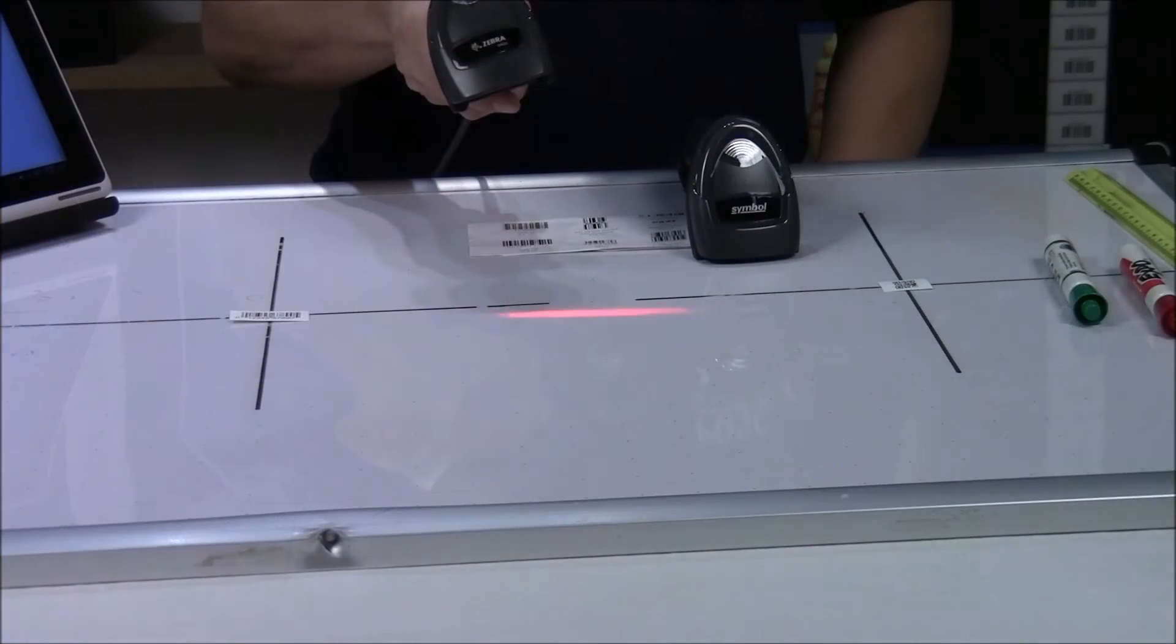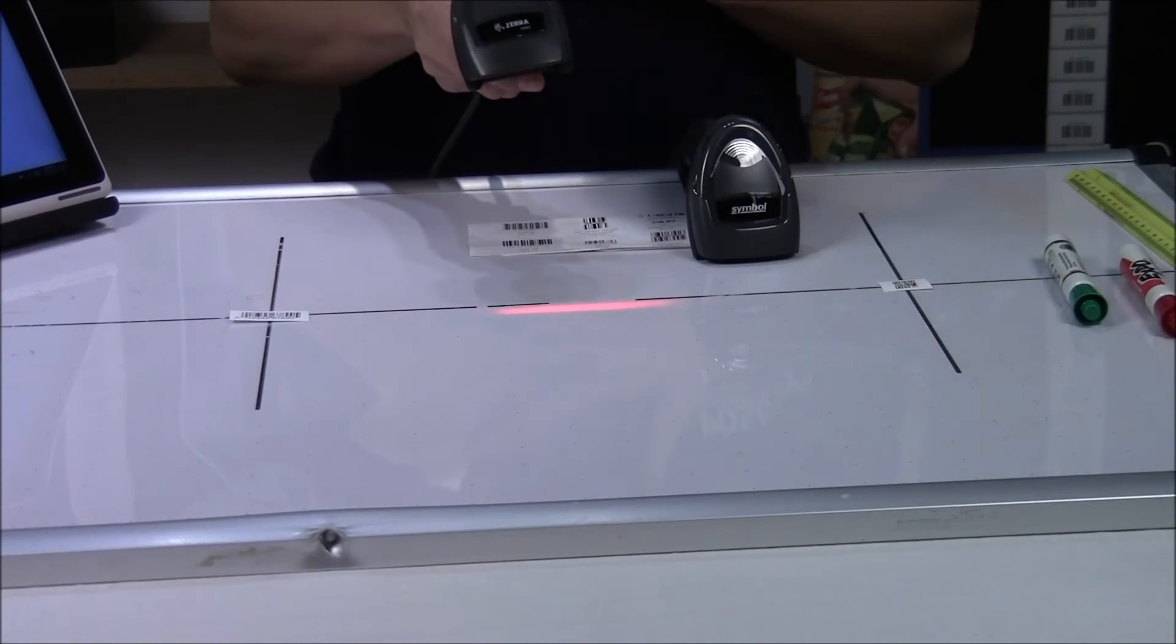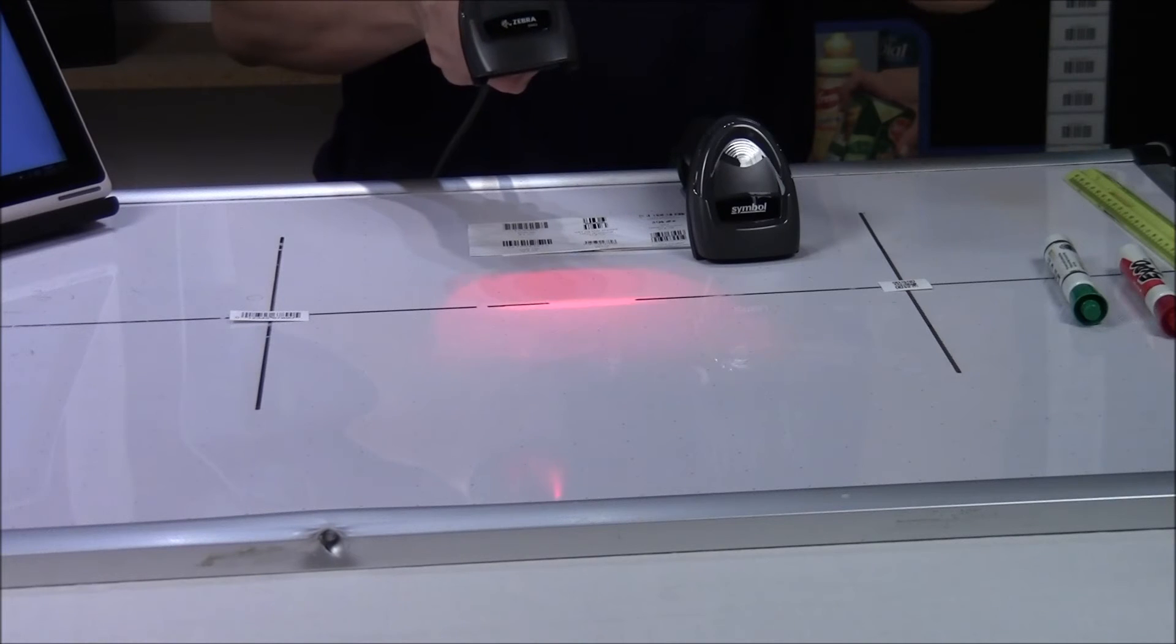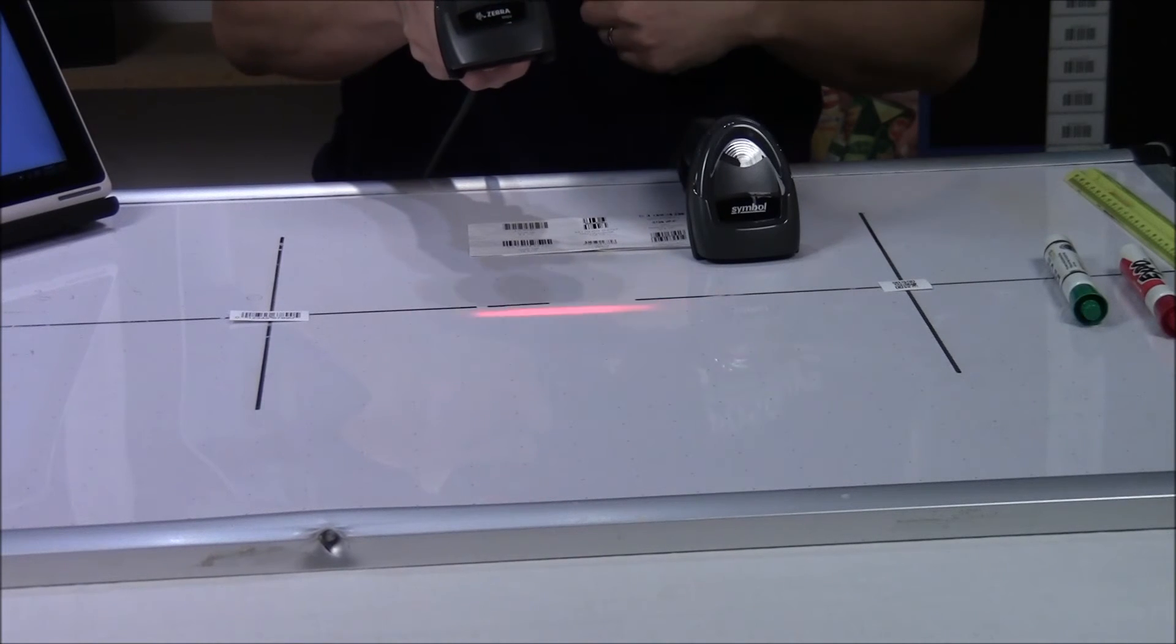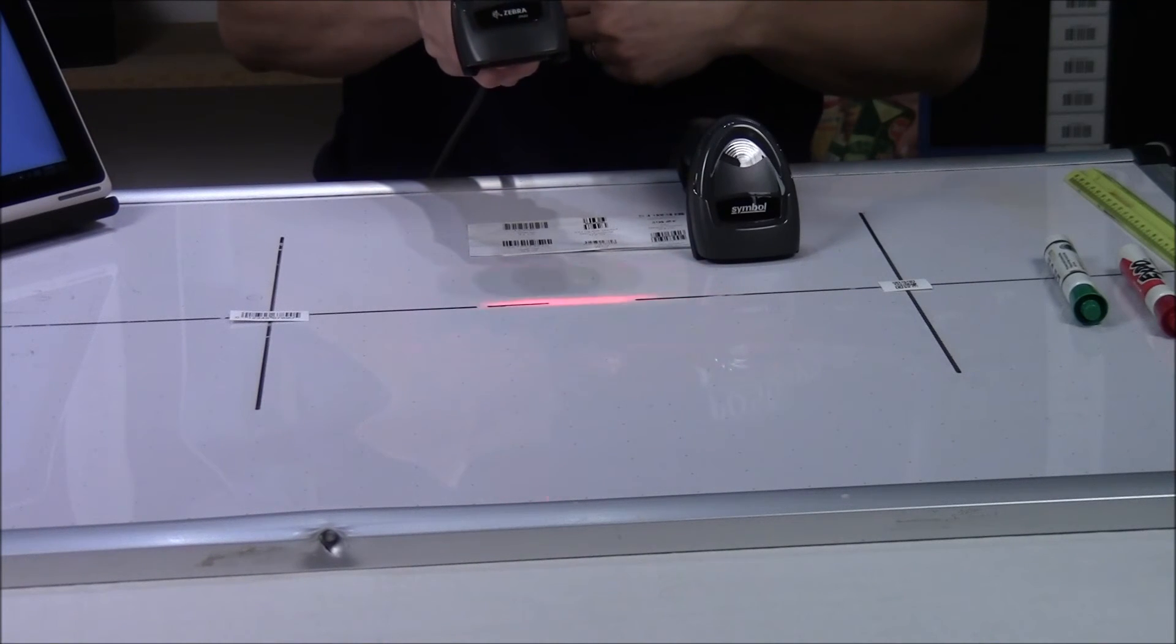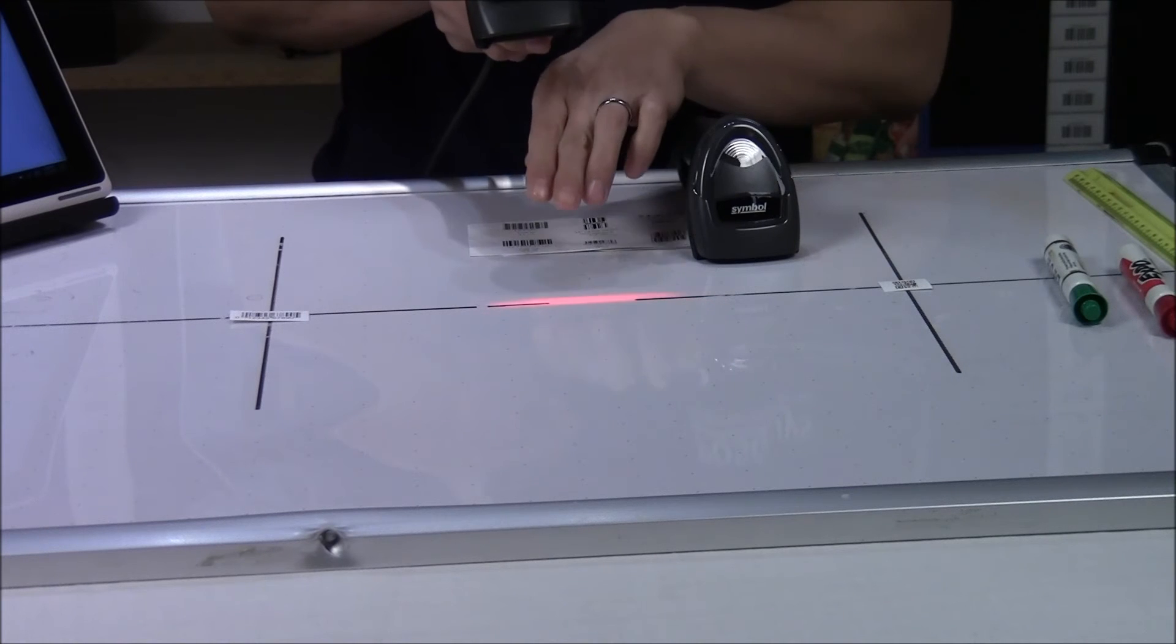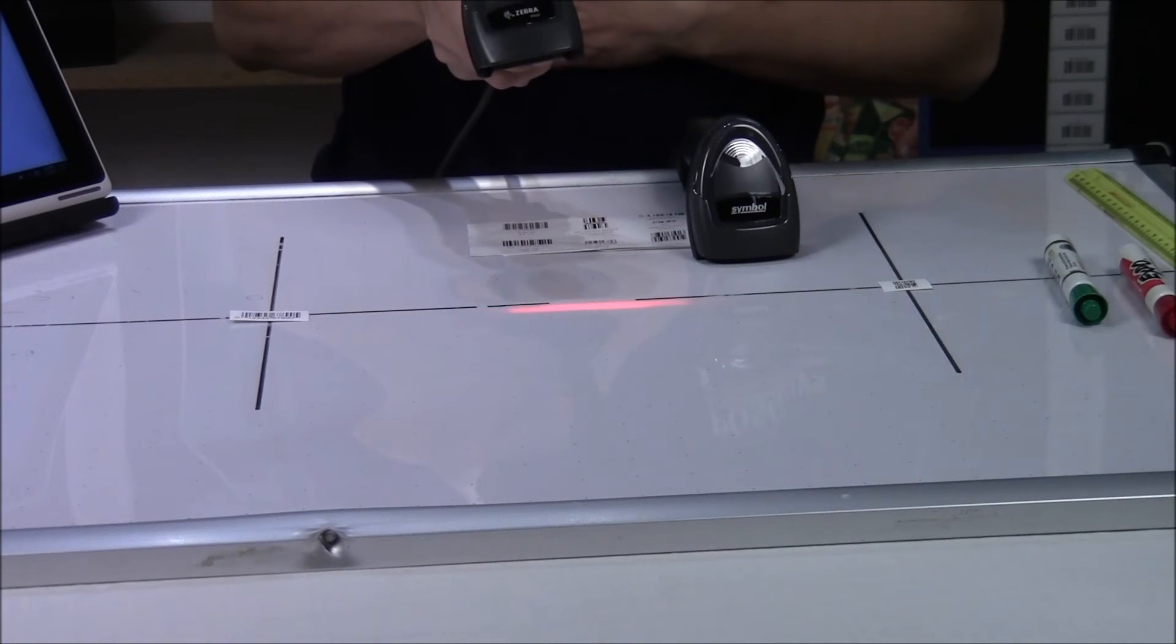The other major difference with these barcode scanners is the aiming reticle. So, with the DS-22, you have a line. And then, when you push the trigger, you get a field of light. So, the line is pretty good. It's standard, which you'd kind of expect to see from a linear imager.